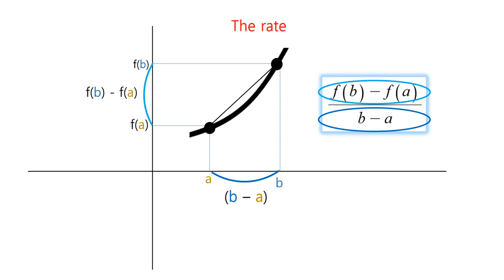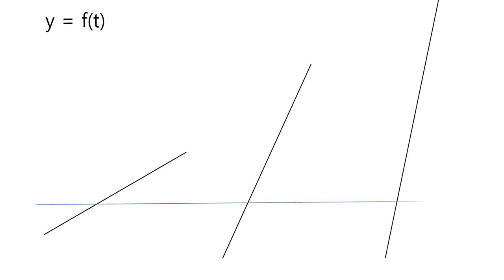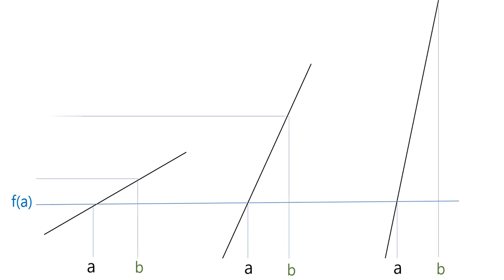Therefore, the gradient of straight line means the rate of change. Why? Look at these three straight lines. You can see this picture. You can see this graph and this mark. You can see that the bigger the value of gradient is, the more dramatically value of function changes. Like this.